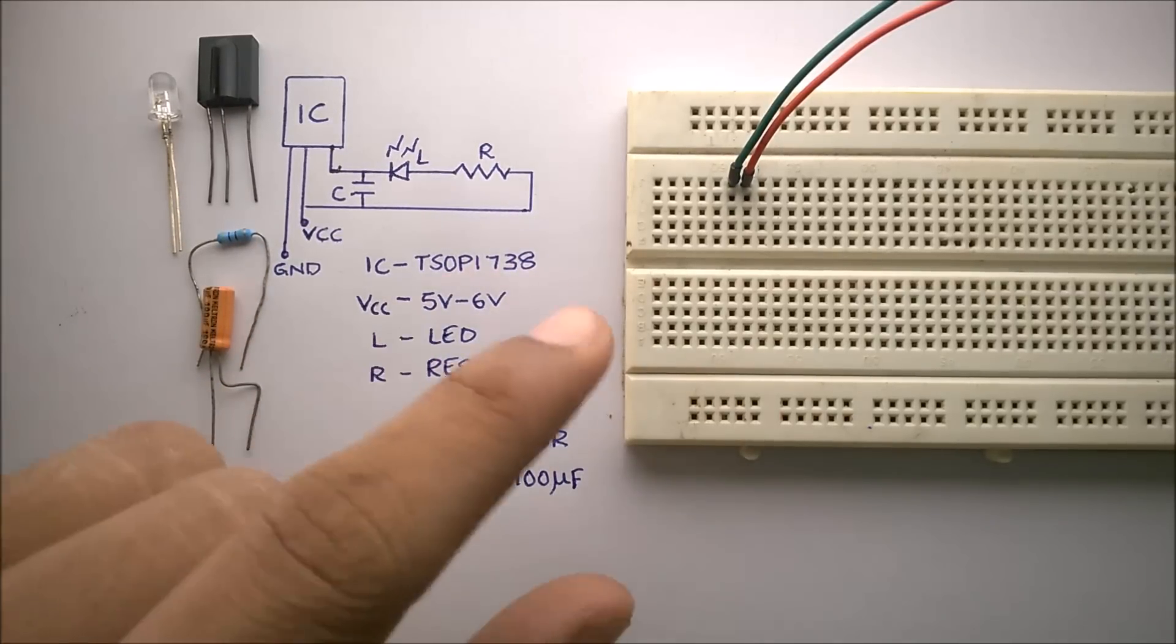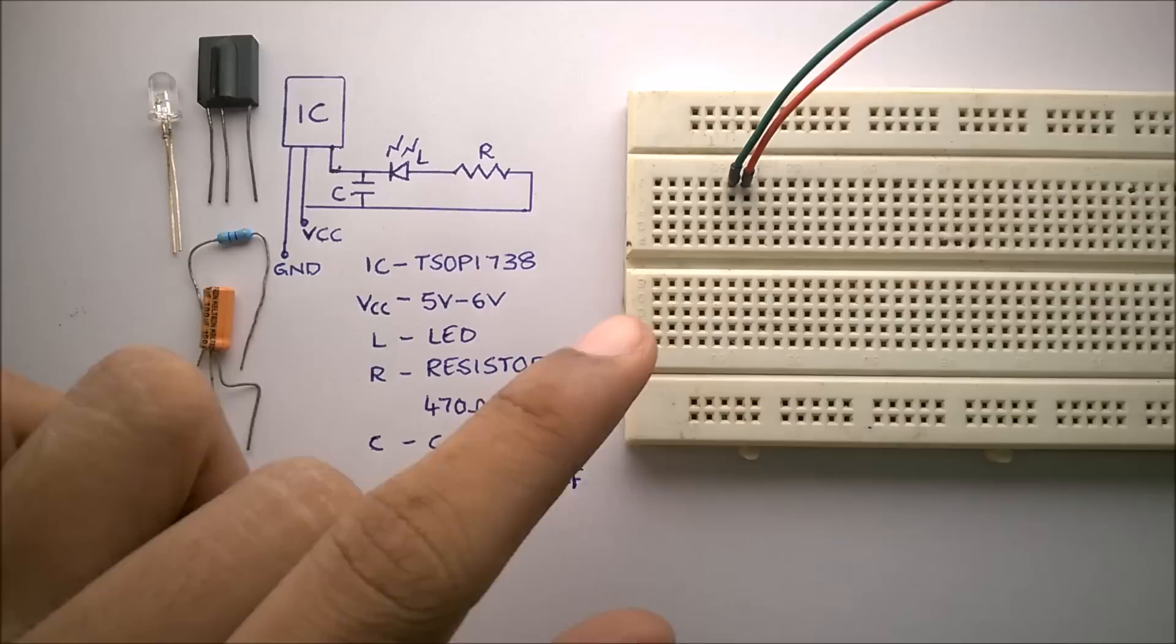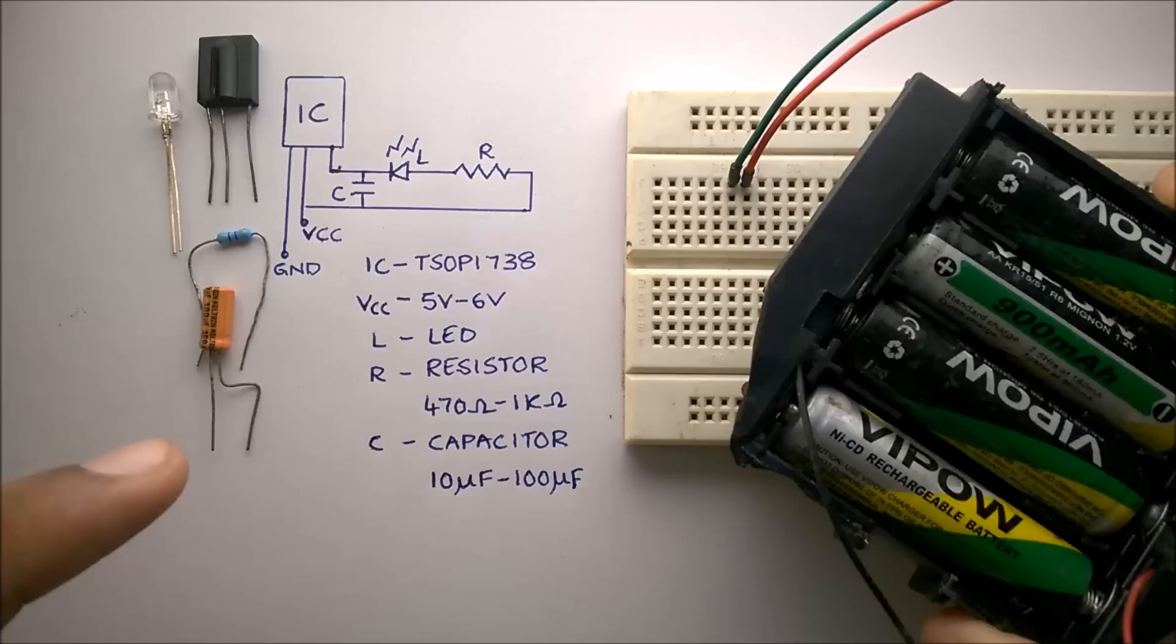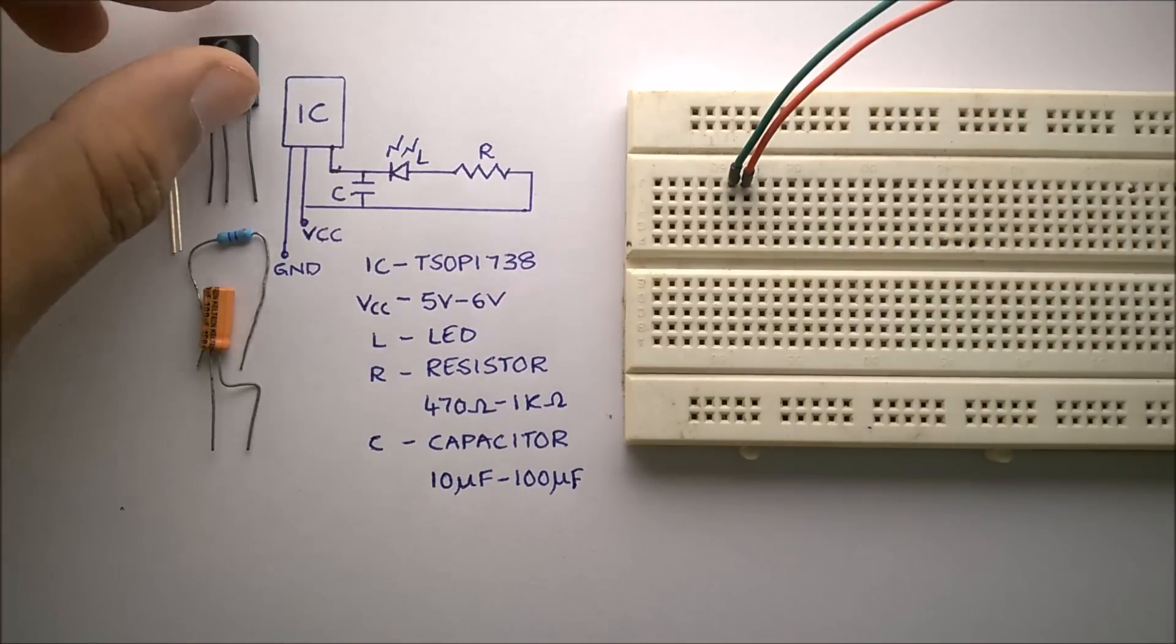And a power supply. The power supply should provide 5 to 6 volts. You can also use 4 AA batteries. I'll show you how to make the circuit now.